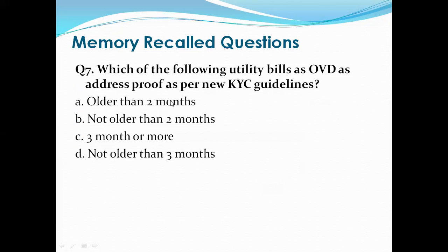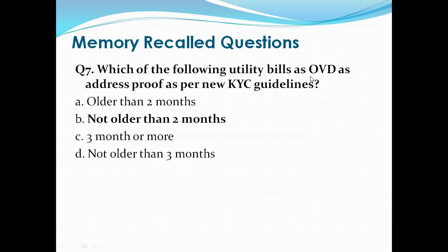Question 7: Which utility bill qualifies as an OVD (Officially Valid Document) for address proof as per the new KYC guidelines? As per the new KYC guideline, if we are taking a utility bill as address proof, how old can it be? Options are: older than two months, not older than two months, three months or more, not older than three months. The right answer is B, not older than two months. Only then can we consider that utility bill as address proof.